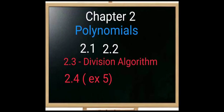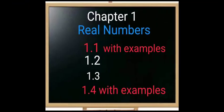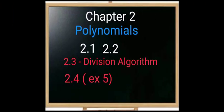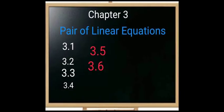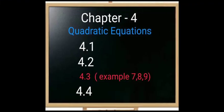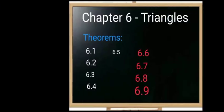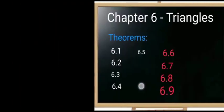In Chapter 1, Real Numbers, Exercise 1.1 and its examples are deleted. Exercises 1.2 and 1.3 are included. Exercise 1.4 along with its examples is deleted. To summarize, exercises and examples marked in white are included in your syllabus, while those marked in red are deleted.